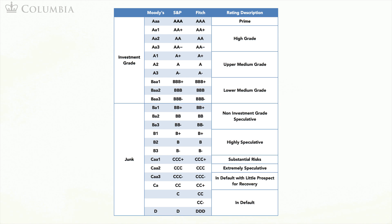Rating agencies like Moody's or S&P study firms and assign to them a debt rating. For example, a rating of AAA means that the debt is very safe. A rating of AA means slightly more risky debt. A debt rating of C means debt that is very risky. The table here shows the different rating categories used by major rating agencies.